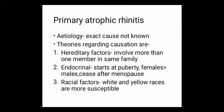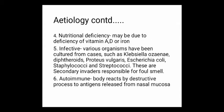Primary atrophic rhinitis — its etiology is not exactly known. Theories include hereditary factors, as it involves more than one member in the same family. Endocrinal basis, as it starts at puberty; females are more affected than males and it ceases after menopause. Racial factors — white and yellow races are more susceptible. Nutritional deficiency, such as deficiency of vitamins A, D, or iron, can also be a cause.